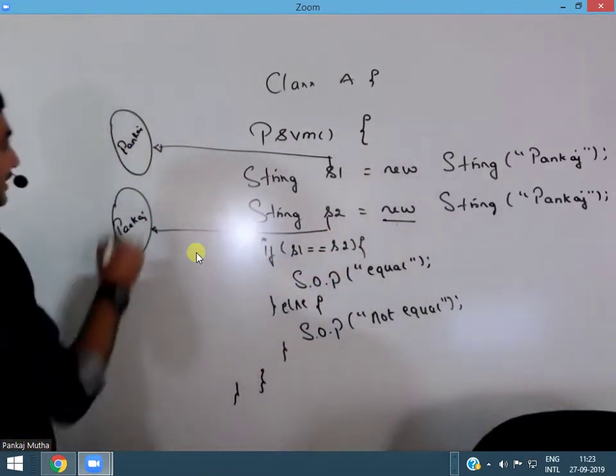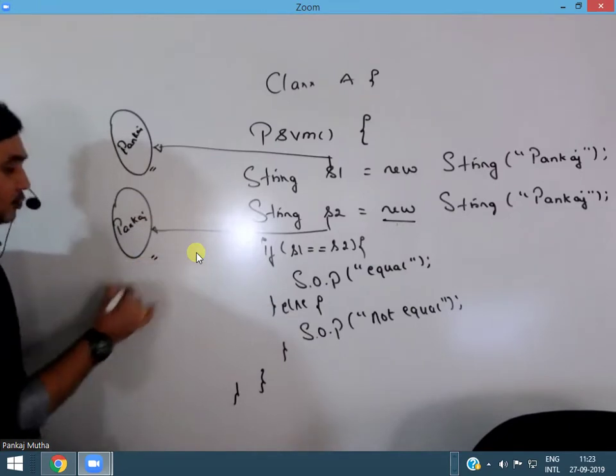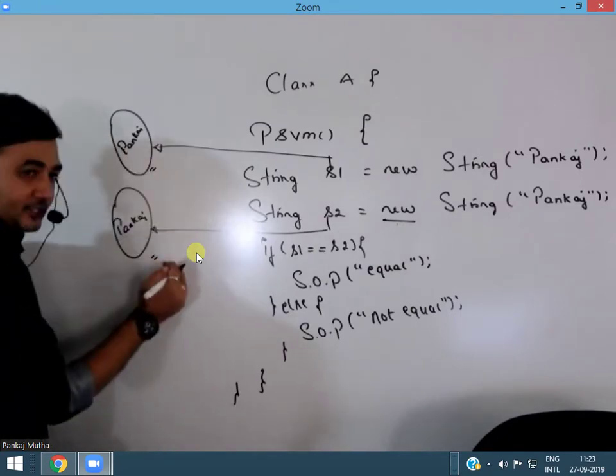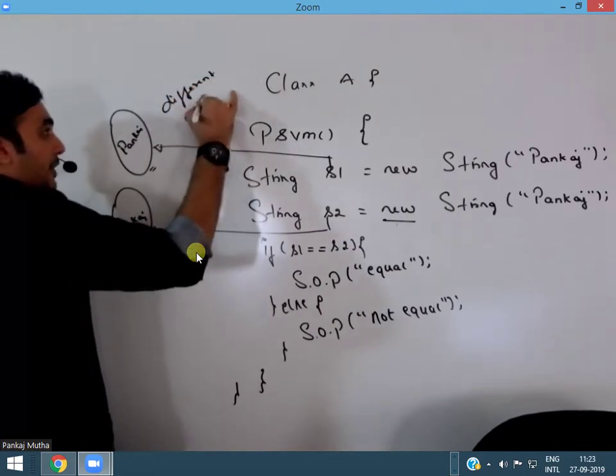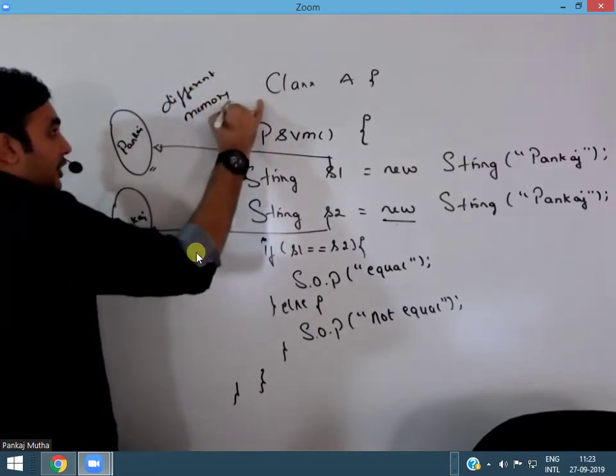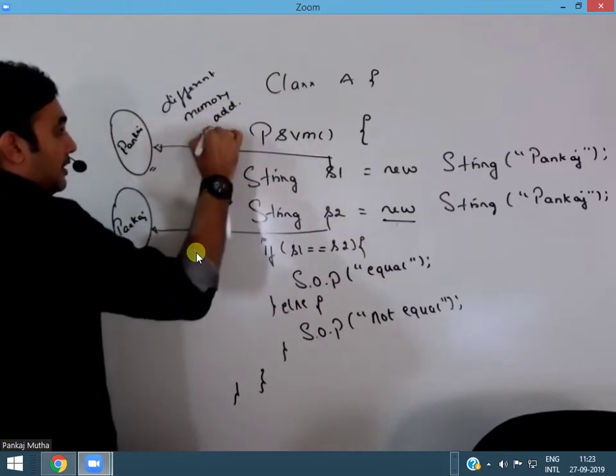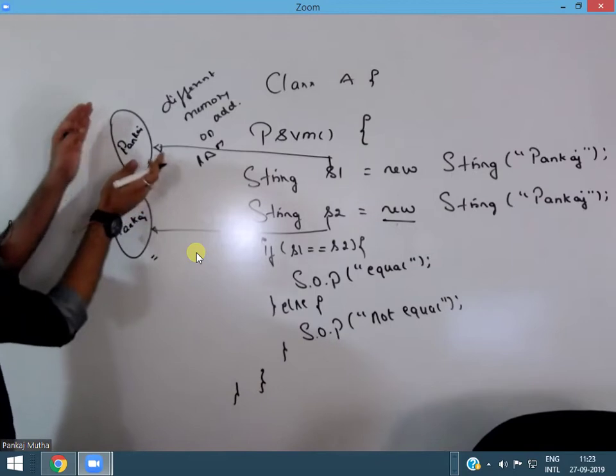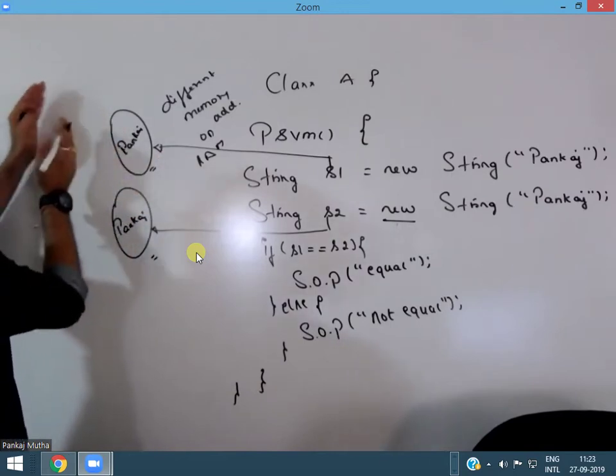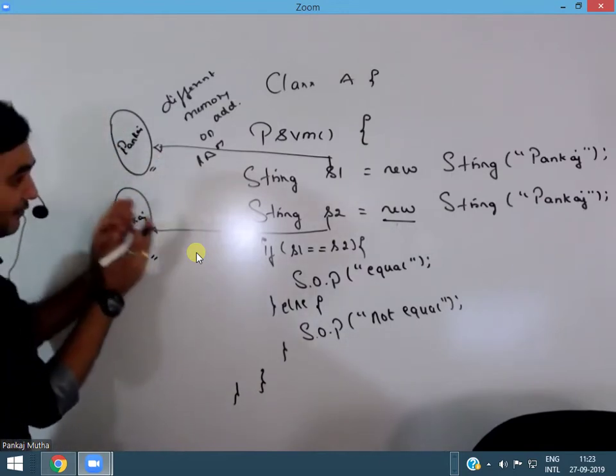Now s1 and s2 are two different objects having different memory address on RAM. So this is created on RAM and has some memory address and this has a different memory address.